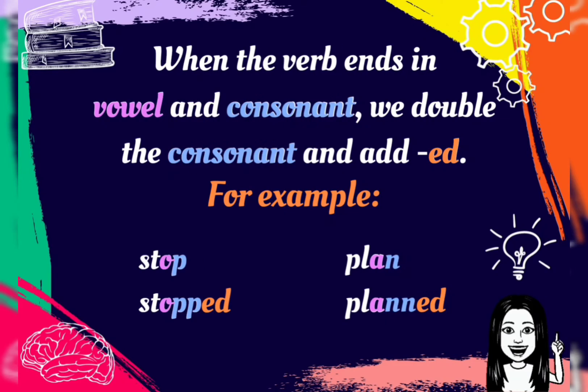When the verb ends in a vowel and consonant, we double the consonant and add "-ed". For example, stop — stopped, plan — planned.